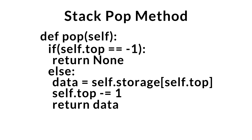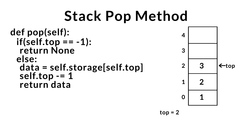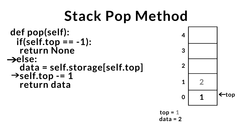Now let's take a look at our pop method in action, using the stack we created in the push example. We check if the stack is empty — it's not — so we move to the else condition, save the data at the top, decrement top to remove it, and return the data from the removed element. Executing pop once more: we check if empty — again it's not — save the top data, decrement top, and return the data from the removed element.